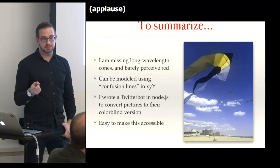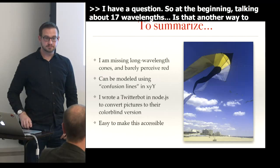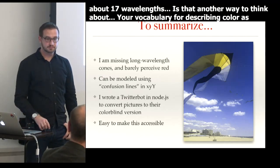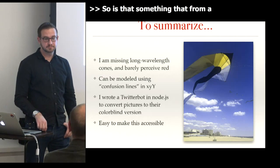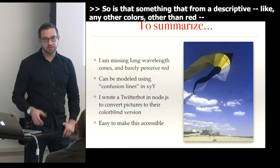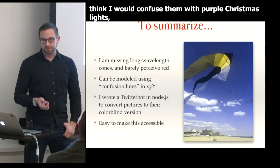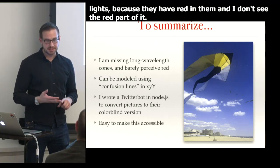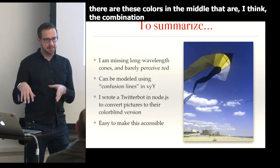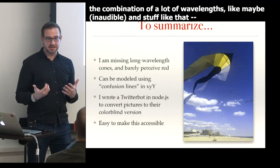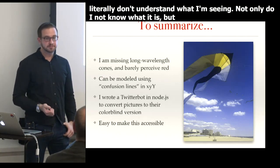Q&A: Someone asks — with only 17 wavelengths, is that like your vocabulary for describing color? Yes, that's an interesting way of putting it. I see blues very well — I can pick up blue Christmas lights easily, though I'd confuse them with purple because I don't see the red component. Yellows and bright greens are colors I can imagine pretty easily. On the other hand, there are colors in the middle — combinations of many wavelengths — where I look at them and literally don't understand what I'm seeing. Not only do I not know what it is, I can't map it to any other part of the spectrum.